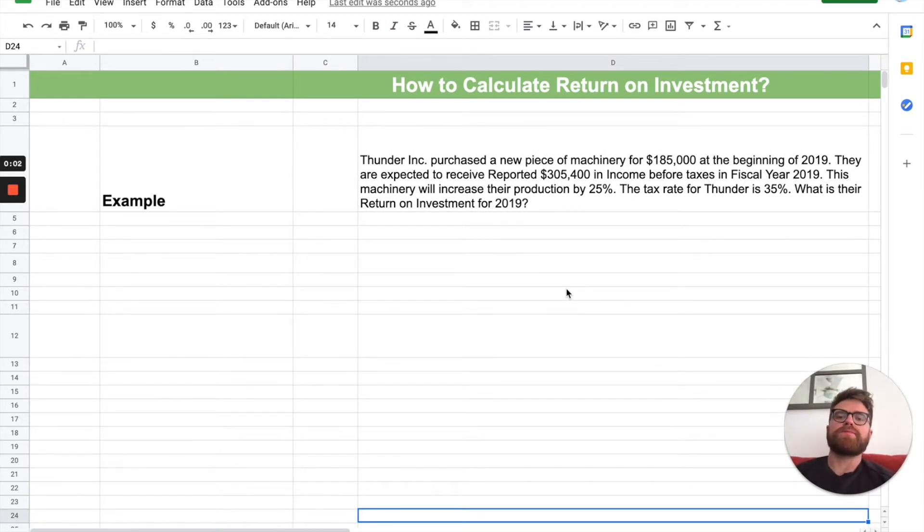Now a practice problem. So, we're going to talk about how to calculate return on investment here. Go through a big problem so you understand it. Now, Thunder Inc., they purchased a new piece of machinery for $185,000 at the beginning of 2019. So, very beginning of the year. They expected to receive reported $305,400 in income. So, they're getting money back after making that investment before taxes, though.